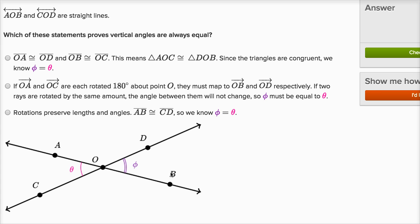Ray OA maps, if you rotate it all the way around 180 degrees, it'll map to OB. And OC, if you rotate 180 degrees, will map to OD. So I'm feeling good about that first sentence. If two rays are rotated by the same amount, the angle between them will not change. Yeah, I'll go with that. If two rays are rotated by the same amount, the angle between them will not change. So if we rotate both of these rays by 180 degrees, then we've essentially mapped to OB and OD. Or another way to think about it, angle AOC is going to map to angle BOD. And so the measure of those angles are going to be the same. So phi must be equal to theta. So I actually like this second statement a lot.